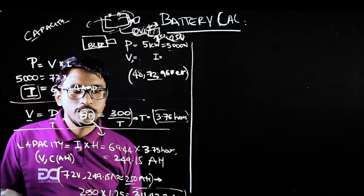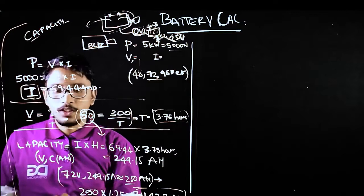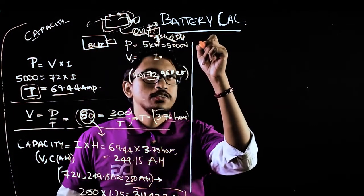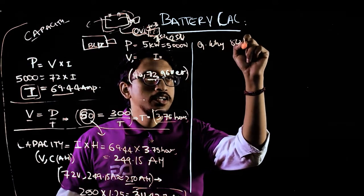You need this much capacity of battery to move your vehicle for 300 kilometers continuously with the average speed of 80 kilometers. This is how it works, but you might have a few questions like why 80 kmph.